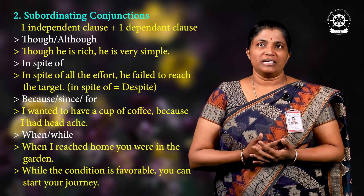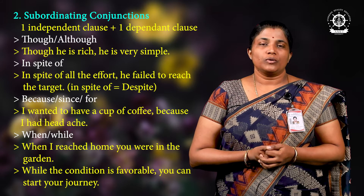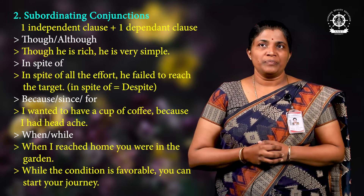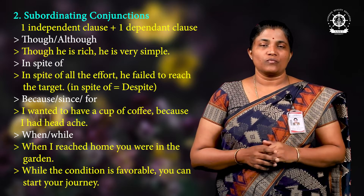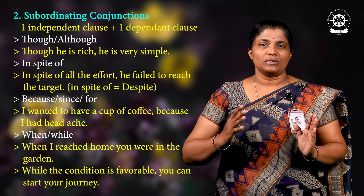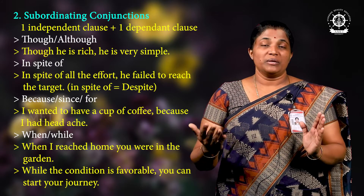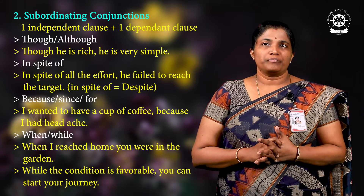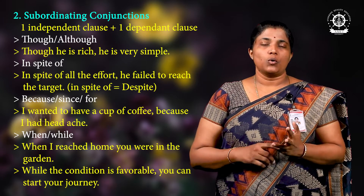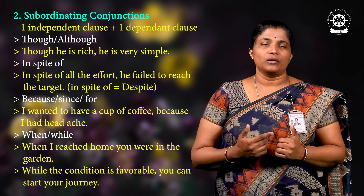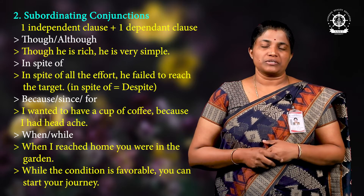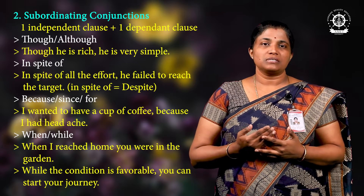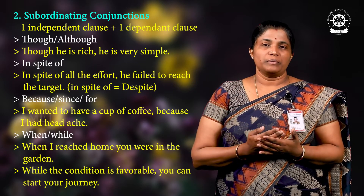Now let's move on to subordinating conjunctions. In coordinating conjunctions, two independent clauses are united. In subordinating conjunctions, one independent clause is joined with one dependent clause. Subordinating conjunctions include: though, although, even though, in spite of, when, while, that.